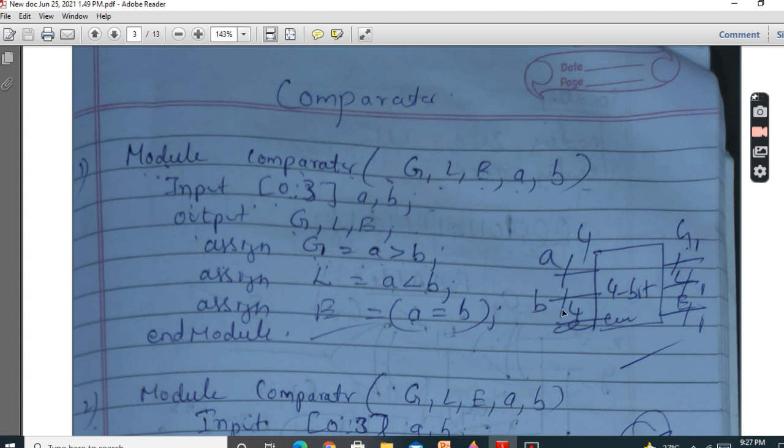And if A is less than B, you will get less than equal to 1. If both are equal, equally. Both are equal. So it has to be 3 outputs.